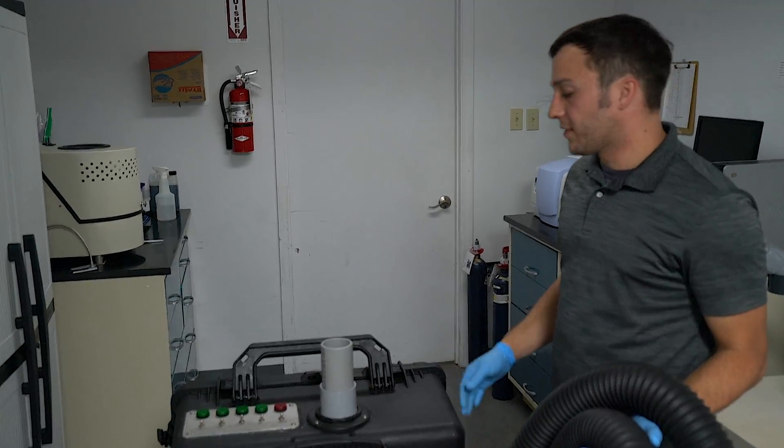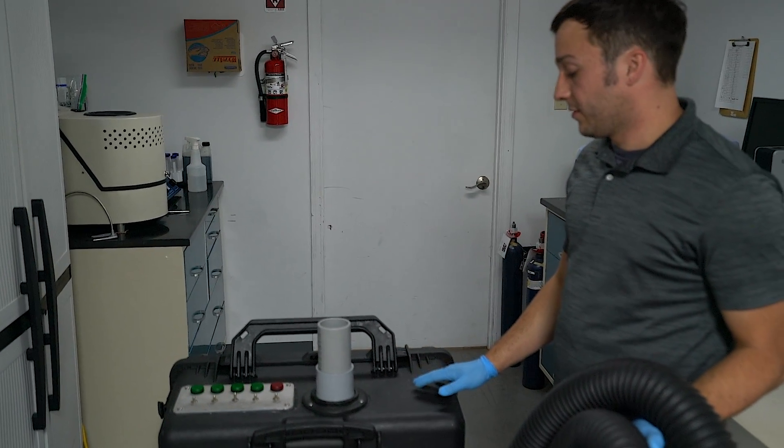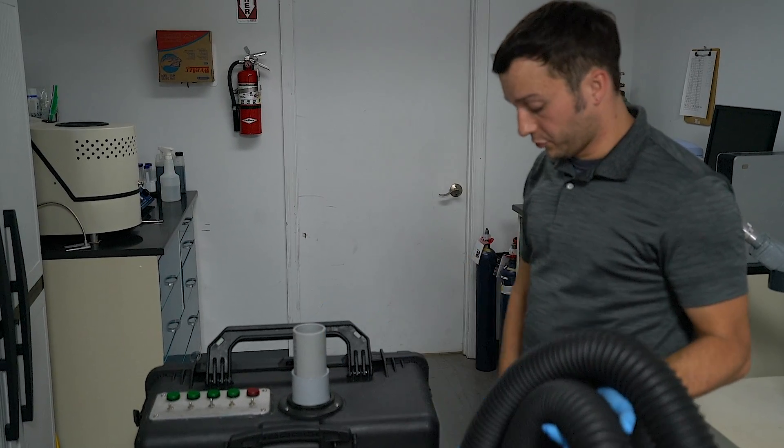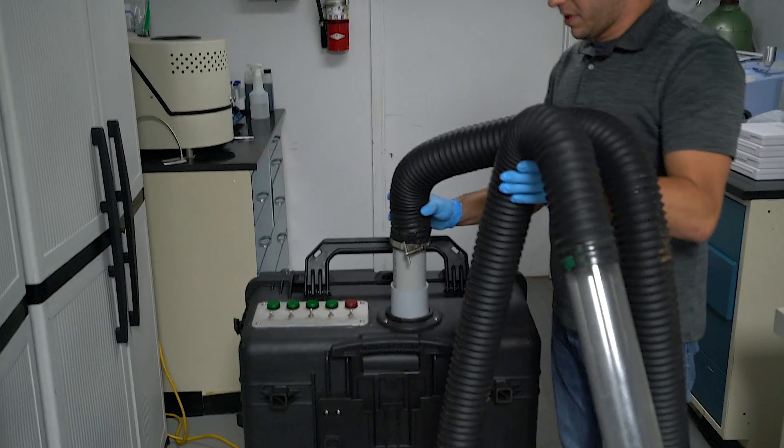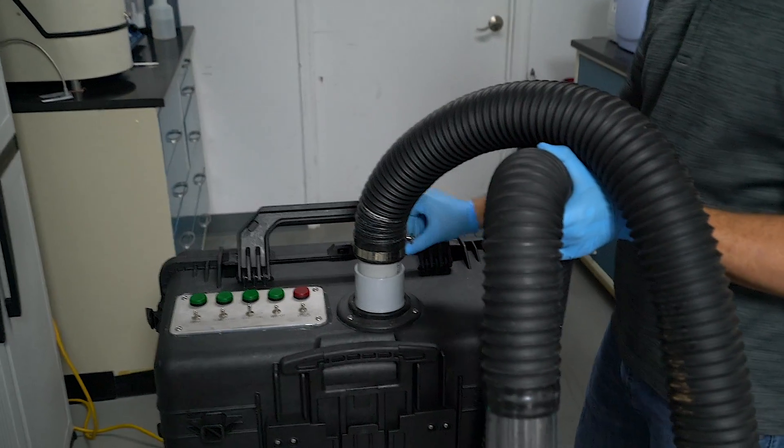This disinfection system can be utilized two ways. For room fogging applications, large areas, it can be used as is with no attachment. For direct fog applications, this hose can be attached by simply placing it on the exhaust port and turning the T-handle to the right.